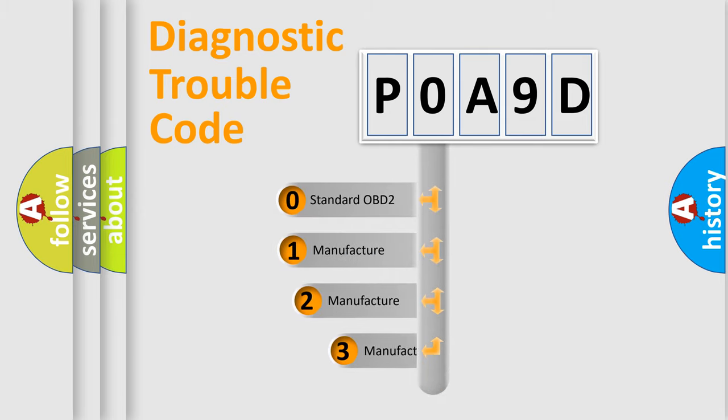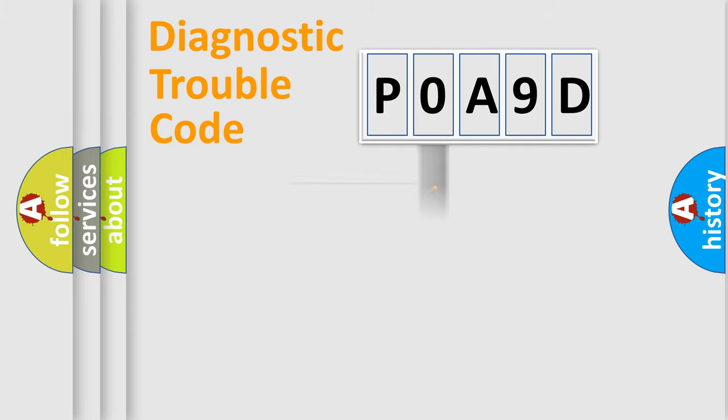If the second character is expressed as zero, it is a standardized error. In the case of numbers 1, 2, or 3, it is a manufacturer-specific expression of the car-specific error.